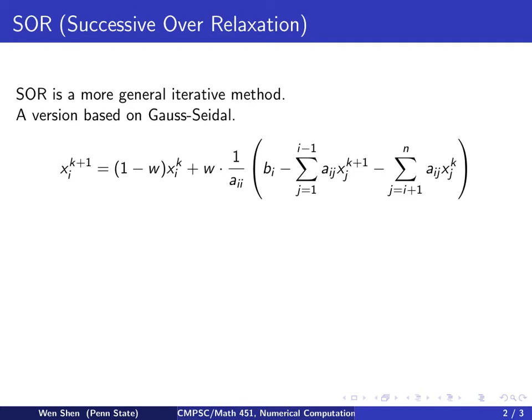We observe that in both Jacobi and Gauss-Seidel iteration, the iteration once it's given is rigid and fixed.